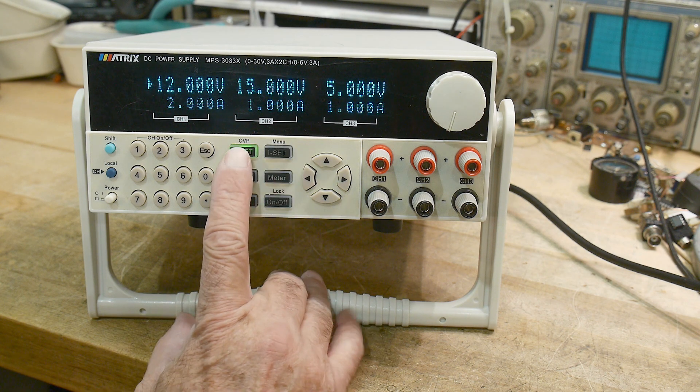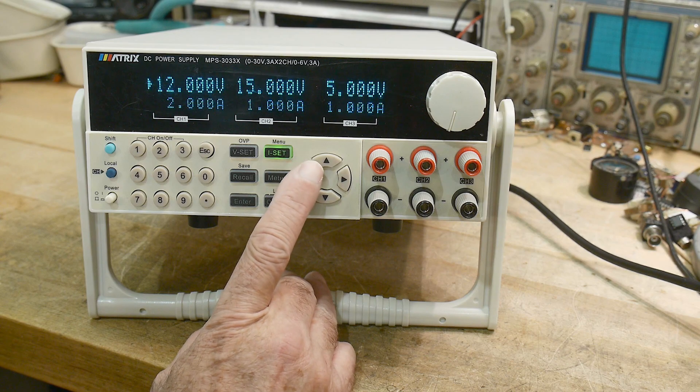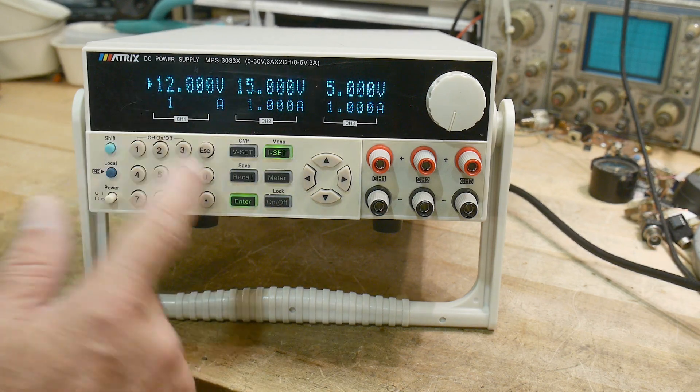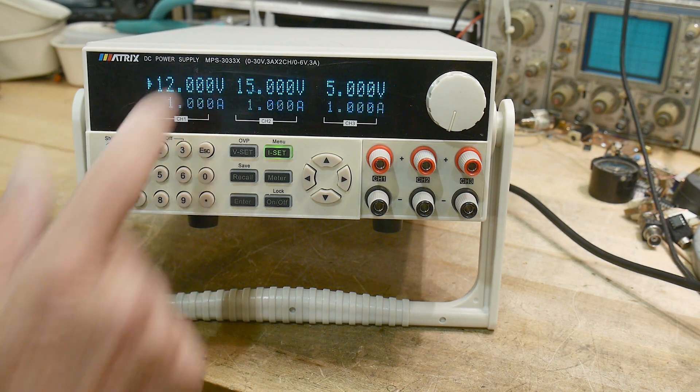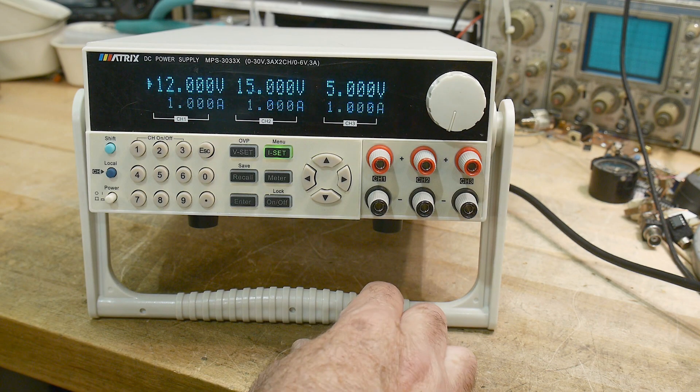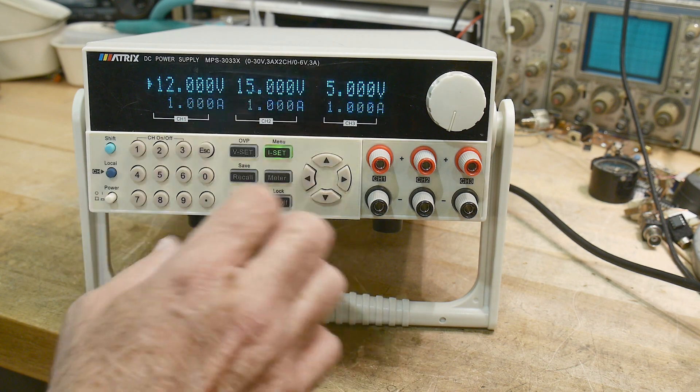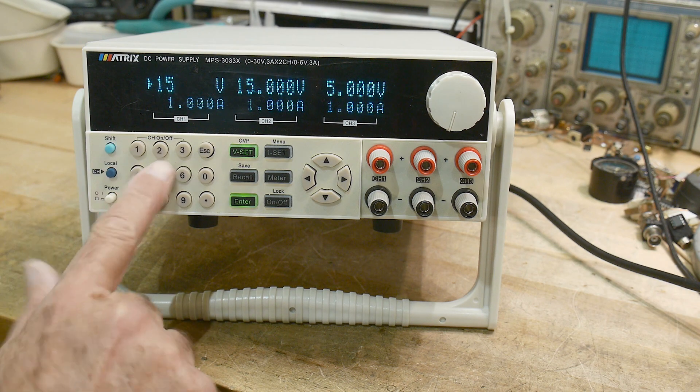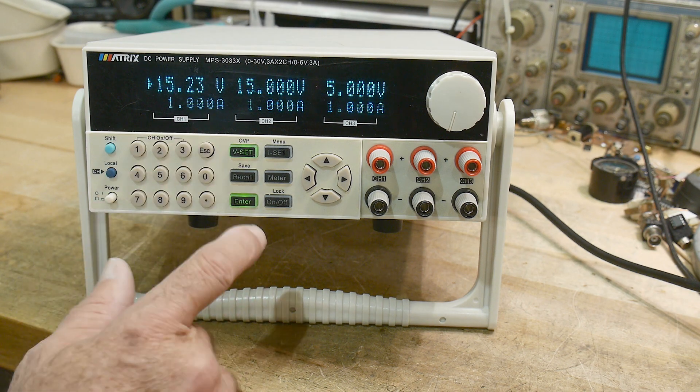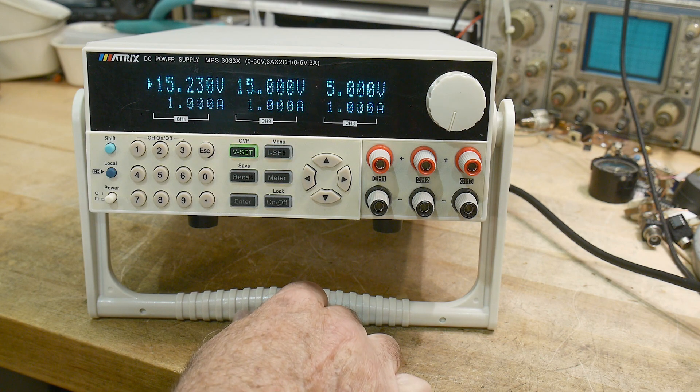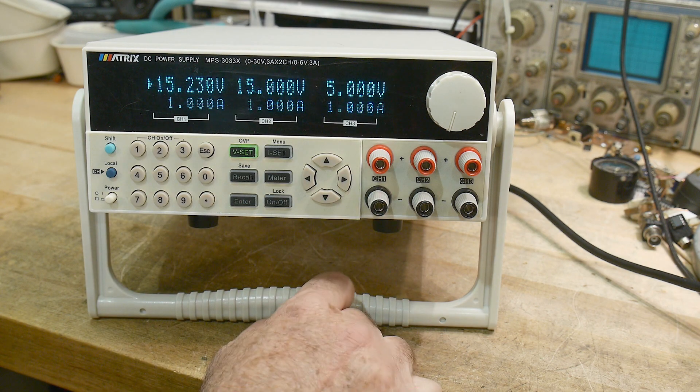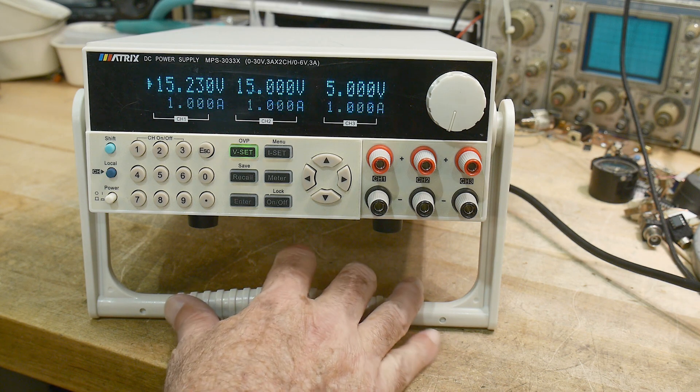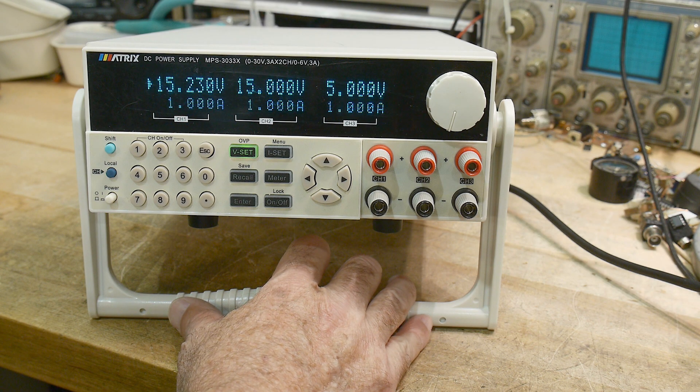We have a voltage set button, we have a current set button, and we can simply set the current to say one amp. Now it's one amp everywhere. Set the voltage to say 15.23, so yeah there you go, pretty accurate out to millivolt, so that is nice.